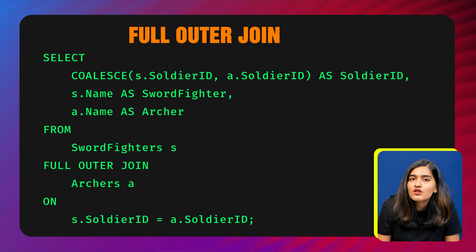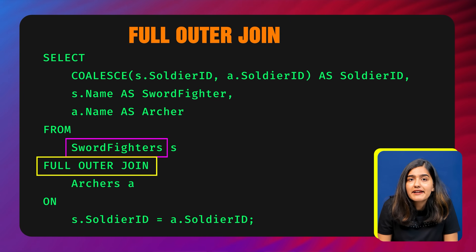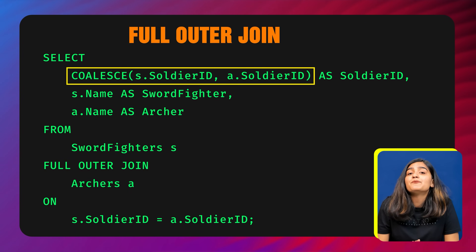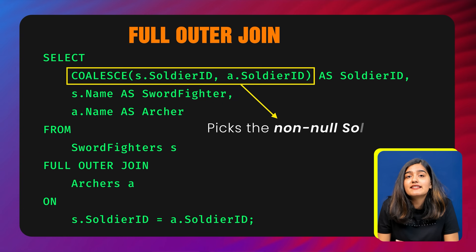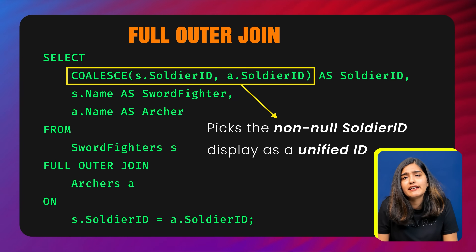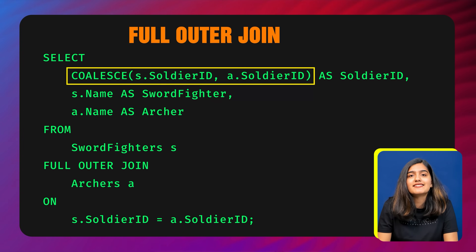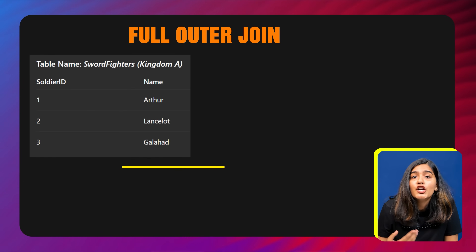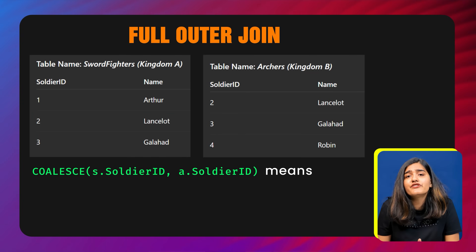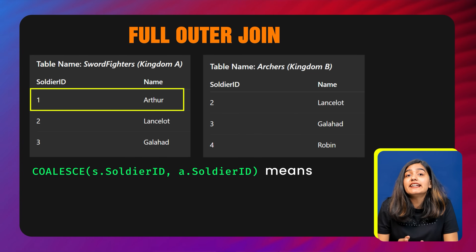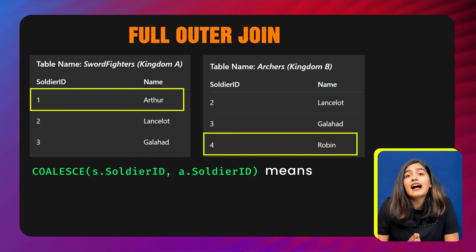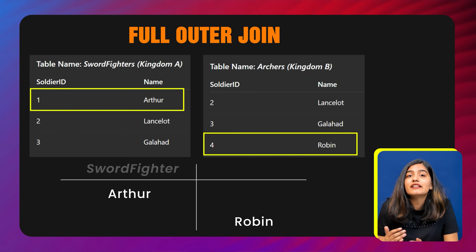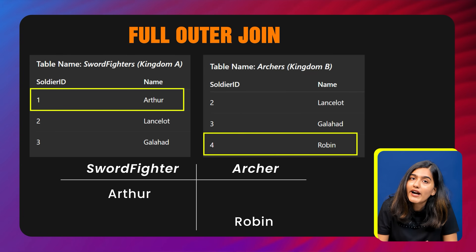This query uses a full outer join to combine data from both tables, ensuring all soldiers appear in the result whether they are only sword fighters, only archers, or both. The COALESCE(s.soldier_id, a.soldier_id) picks the non-null soldier ID from either table to display as a unified ID — think of it like a backup plan. It checks values from left to right and picks the first one that's not null. So if the soldier exists in the sword fighters table, use that ID; but if it's null — meaning the soldier is only in archers — then use the ID from the archers table. The names from both tables are labeled as sword_fighter and archer; if a soldier is only in one table, the other side's name will appear as null.